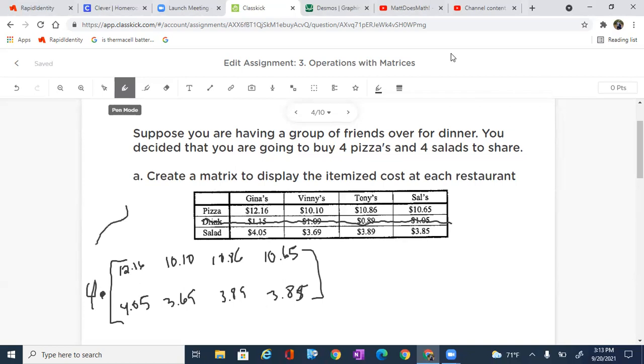And the way we show that is we just put that four right out in the front. We say we are going to multiply it. And that is how we write a scalar multiple with matrices. And that just says that everything is going to get multiplied by four.